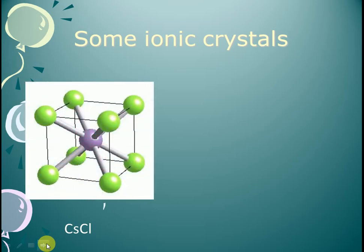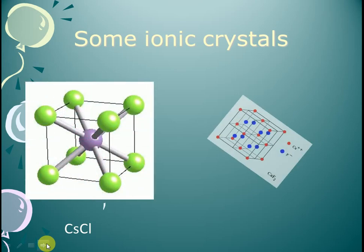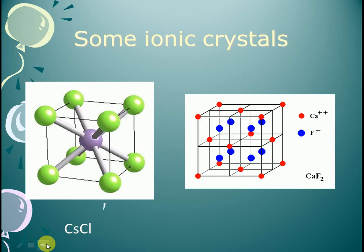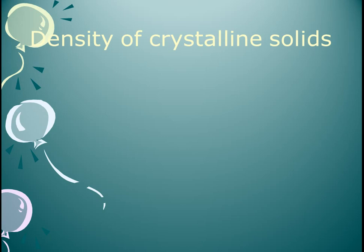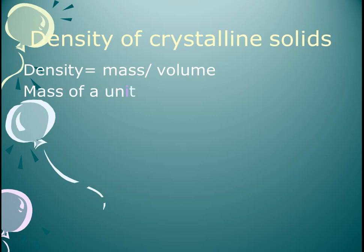Here are the numbers related to CsCl and CaF2 structures. The circle is found in crystals, which represents the positions of titanium. The density of a crystalline solid is an important property we will now discuss.